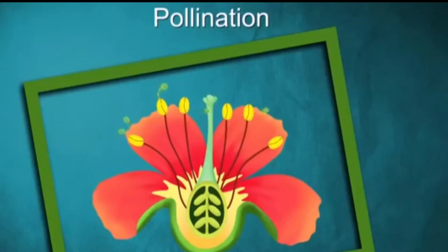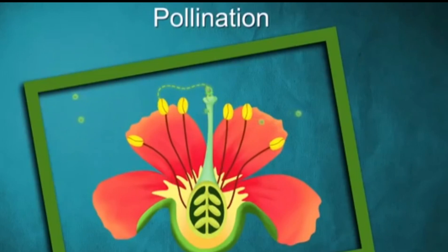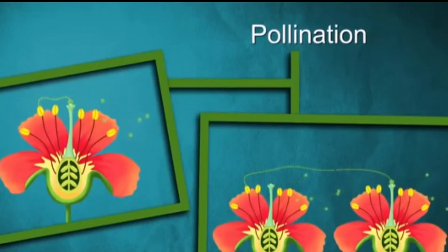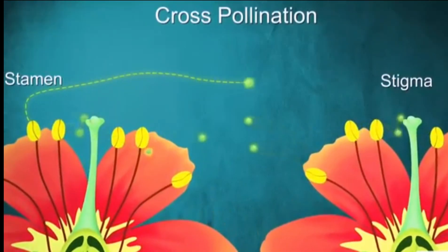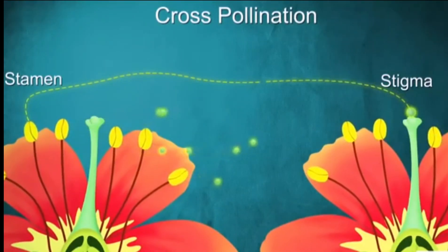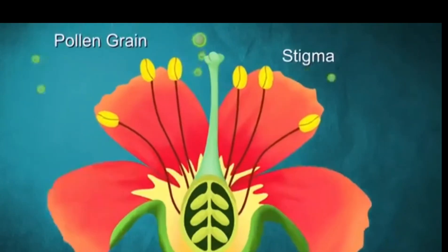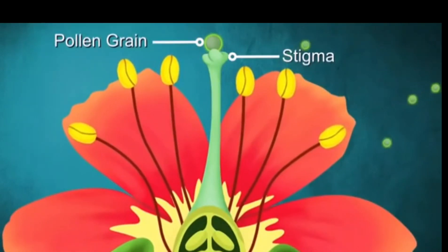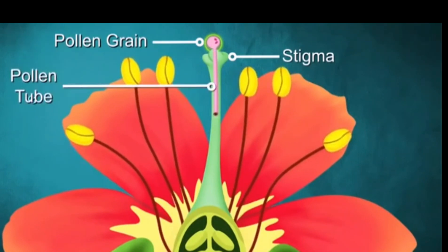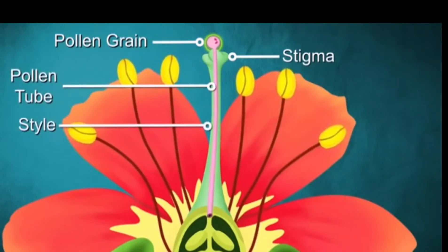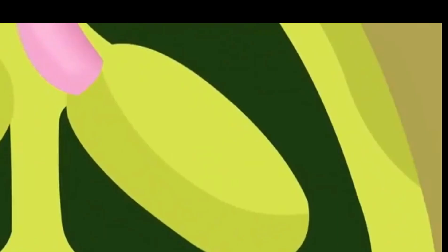In order for the egg cells to be fertilized, the male sex cells must be transferred from the stamen to the stigma. This is the process which we term cross-pollination, where pollen from the male moves over to that of the female.